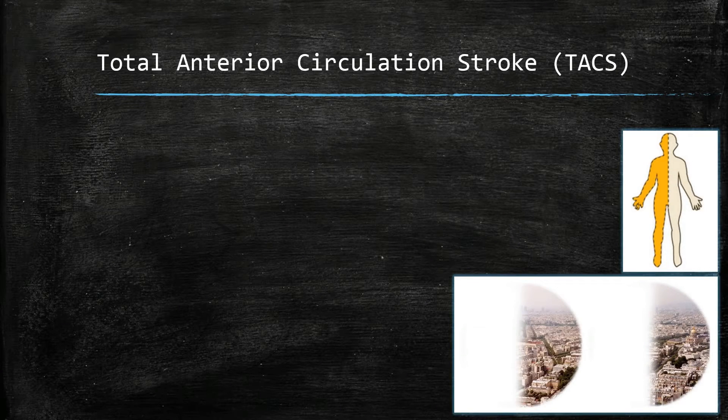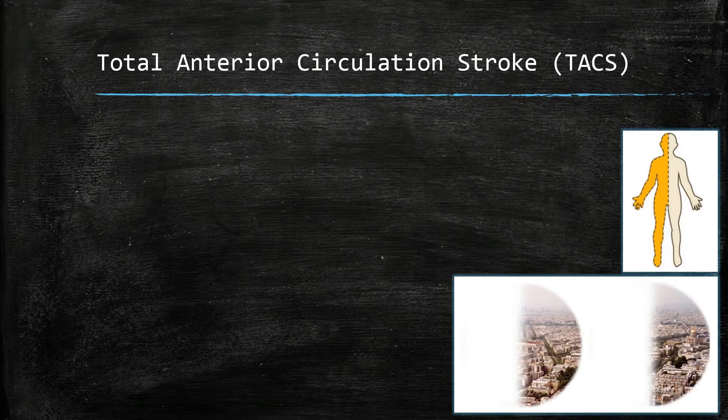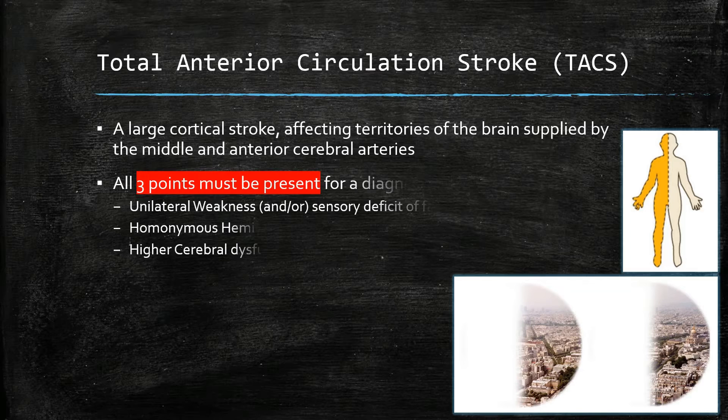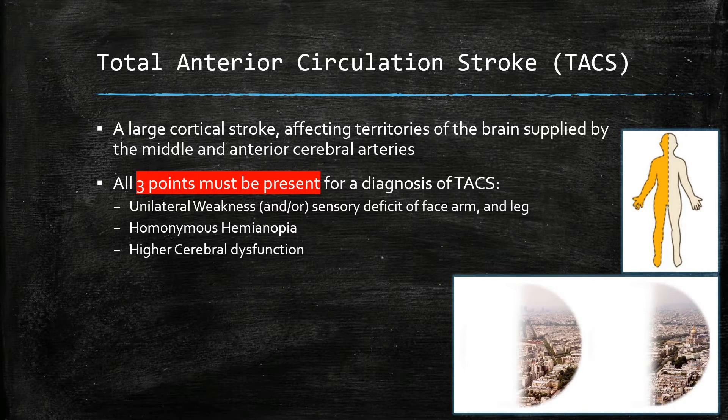Total anterior circulation syndrome is a large cortical stroke affecting the middle and anterior cerebral artery territories. To diagnose it, all three of the following must be present: unilateral weakness and/or sensory deficit of face, arm and leg; homonymous hemianopia; and higher cerebral dysfunction such as dysarthria.